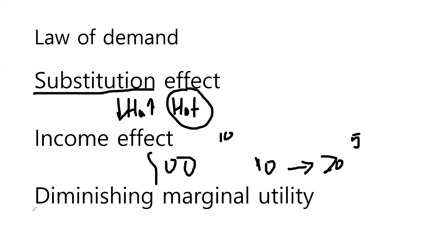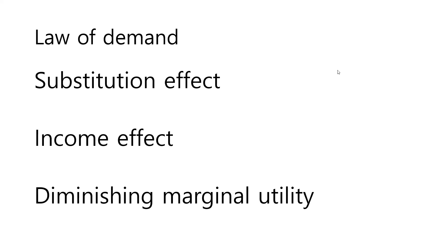The third reason is diminishing marginal utility, a concept we have already discussed. The utility or satisfaction of people usually decreases as they purchase an additional unit of a certain good. Those are the three reasons why the law of demand happens.